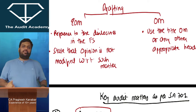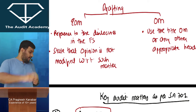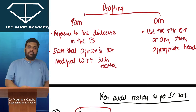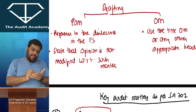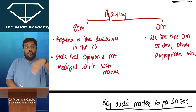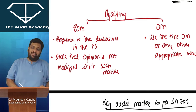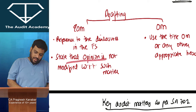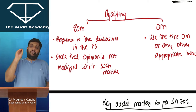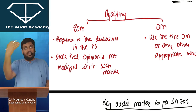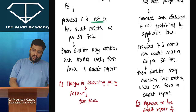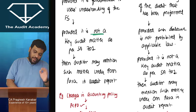For any audit report concept, there are three things: concept, examples, and drafting. For emphasis of matter paragraph drafting, since it is an accounting clarification, we write it with reference to the note number of the financial statements. We also clarify that our opinion is not modified with respect to such matter. For other matter paragraph, the institute says you can use the heading 'Other Matter' or any other appropriate heading — no further strict drafting rules.